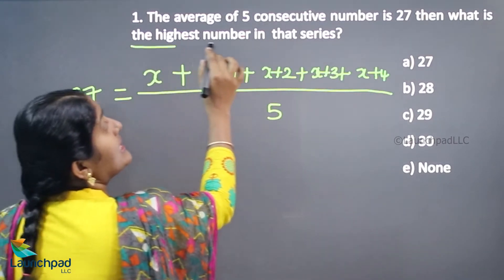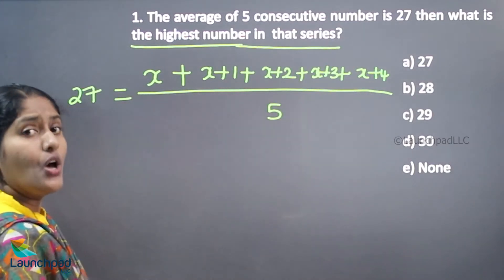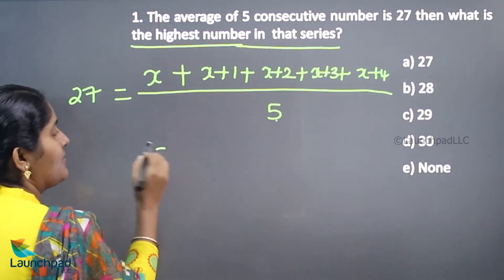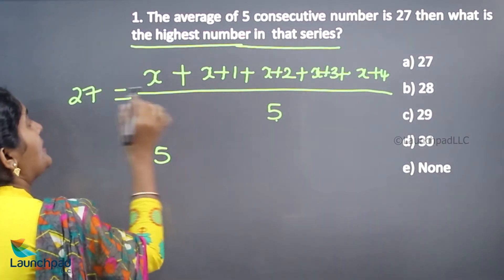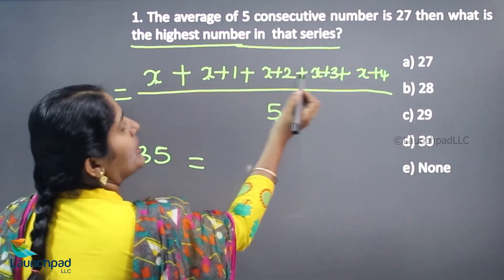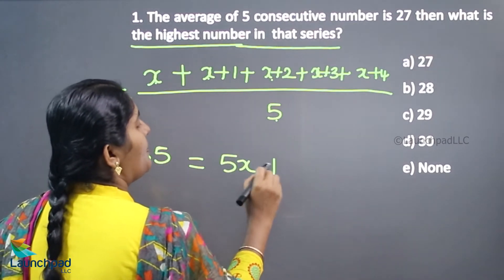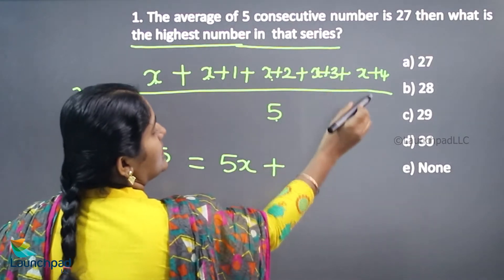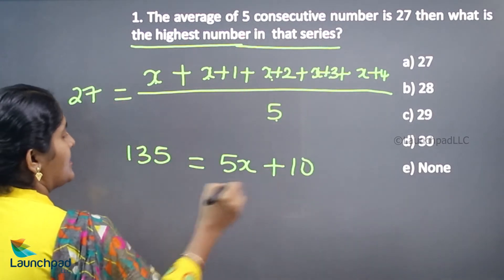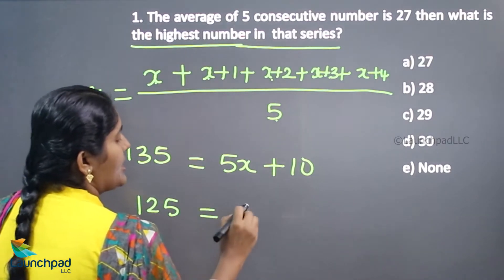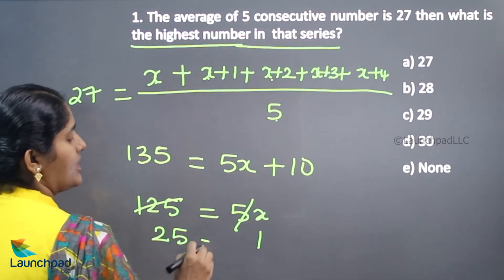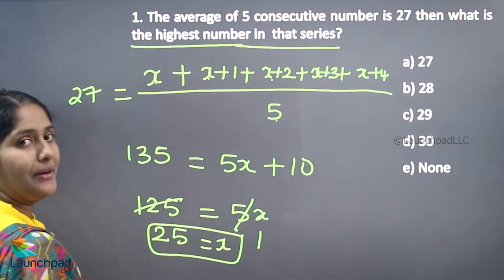So 5 multiplied by 27 is 135. We have 5x plus (1+2+3+4) = 5x + 10 = 135, which gives 5x = 125, so x = 25. The first number is 25.